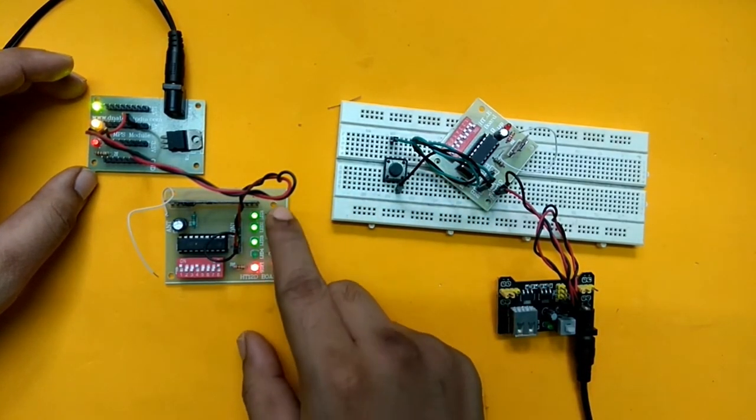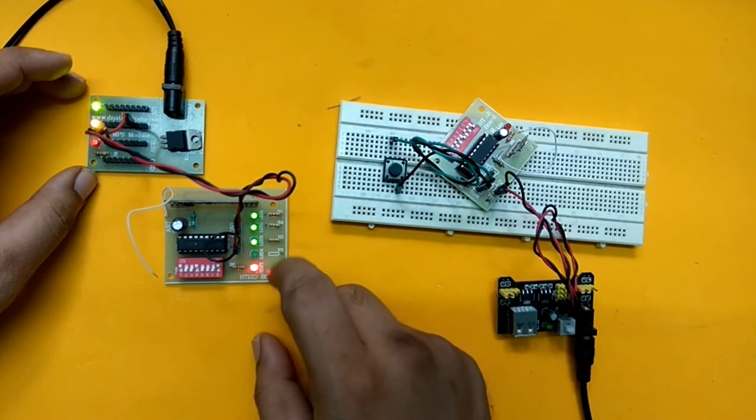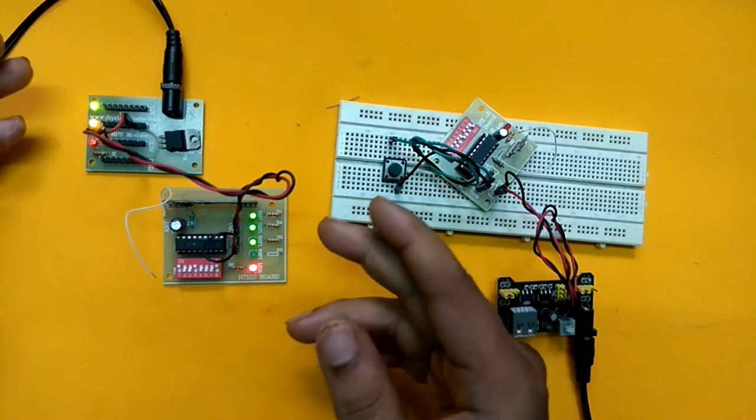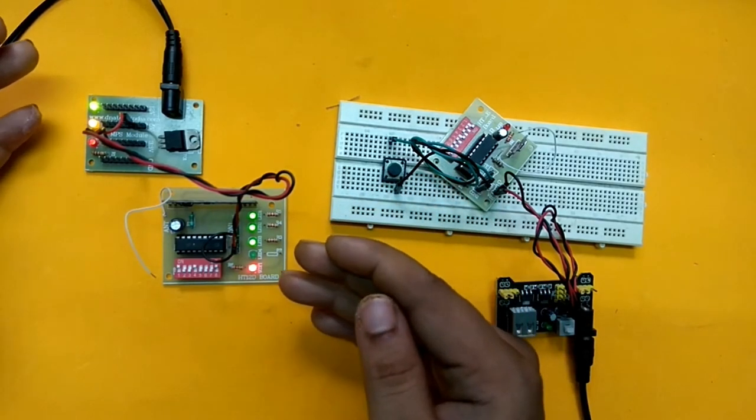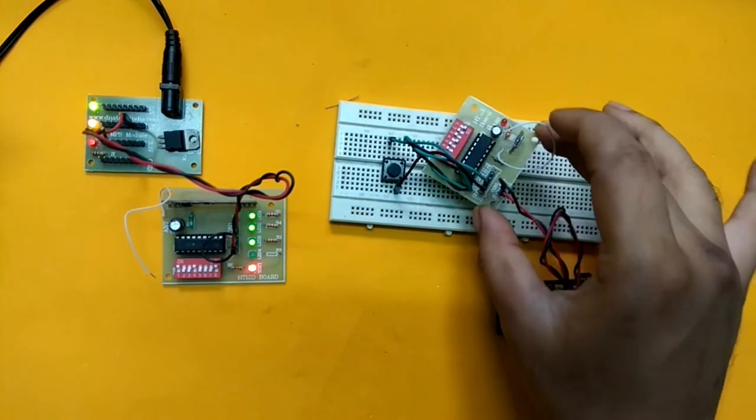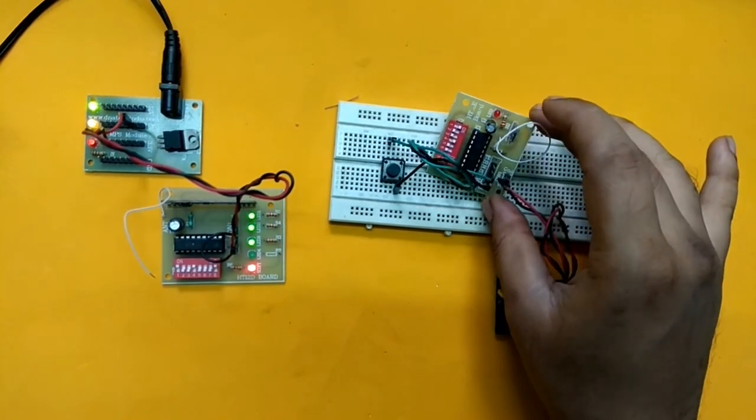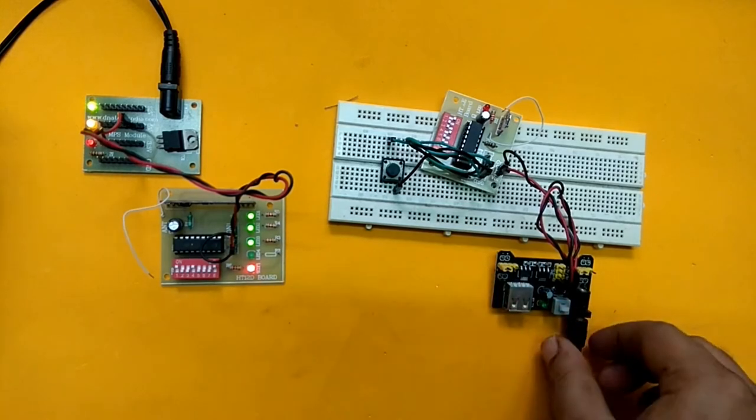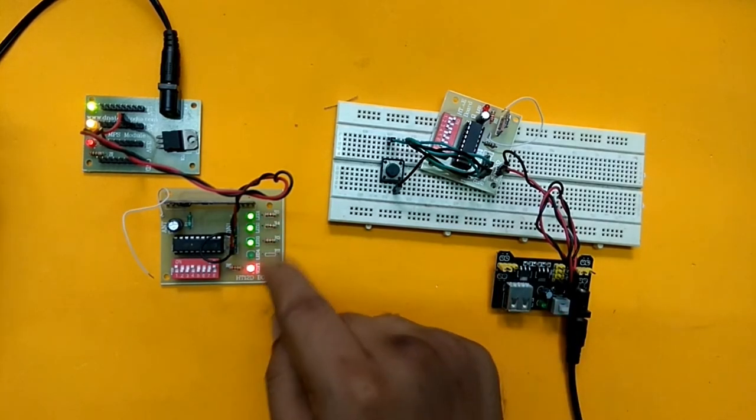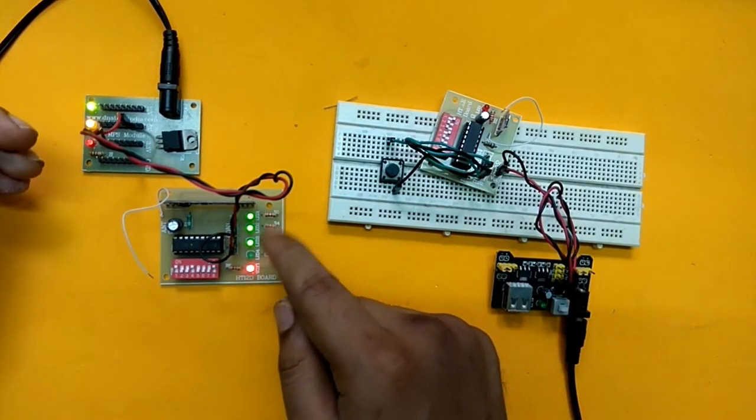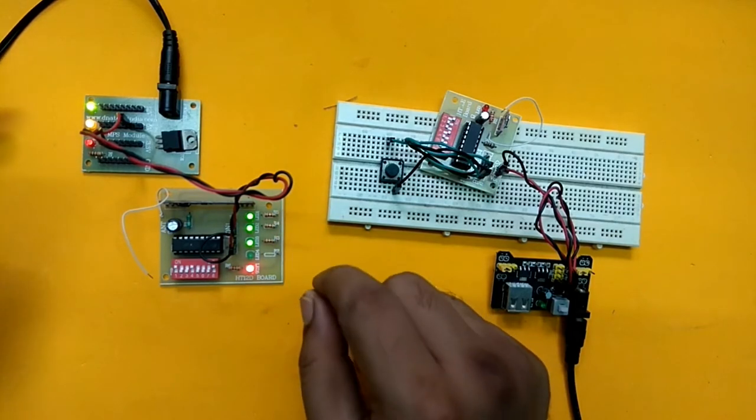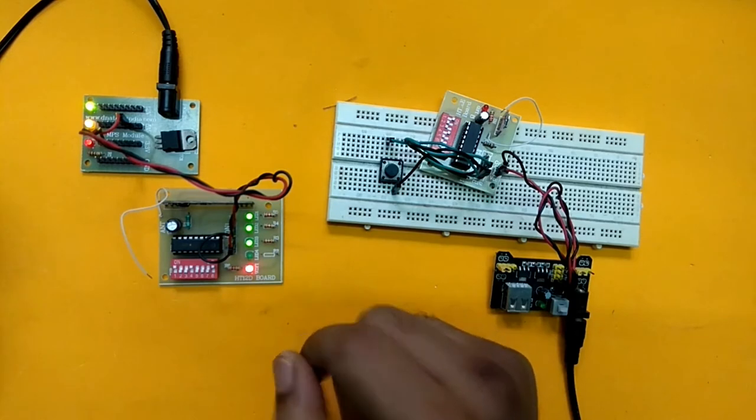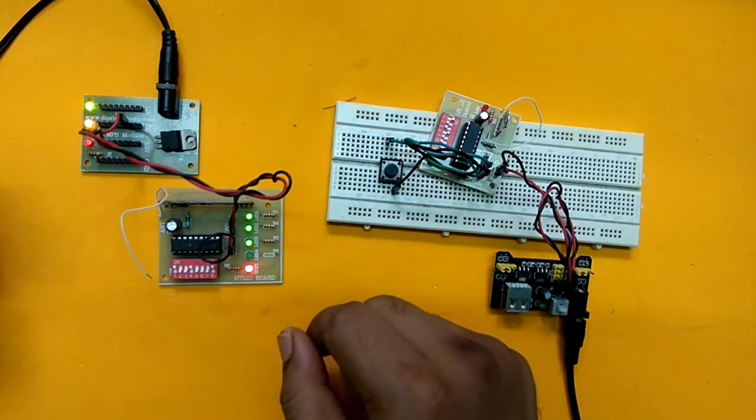You can see as soon as the receiver is turned on, all the LEDs light up. This shows that the output data pins of the decoder are active now. But if you take a closer look, you can see our transmitter section is not even turned on. This problem exists due to the active power-on characteristics of the HD12D decoder in the receiver part. This means whenever this chip is turned on it will be active even before any signal is transmitted from the transmitter.